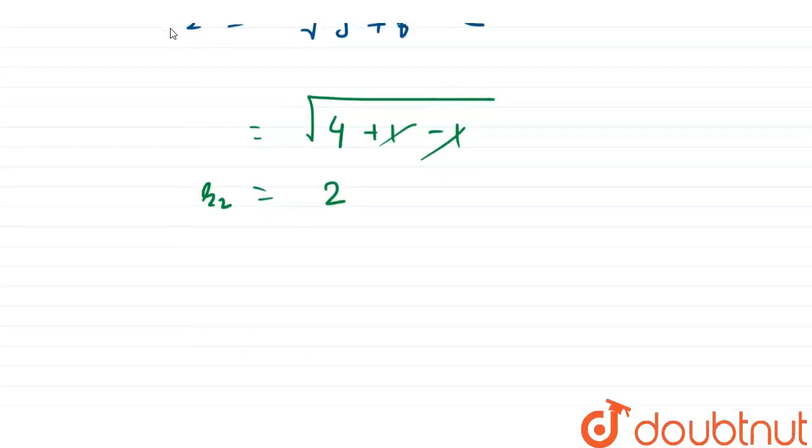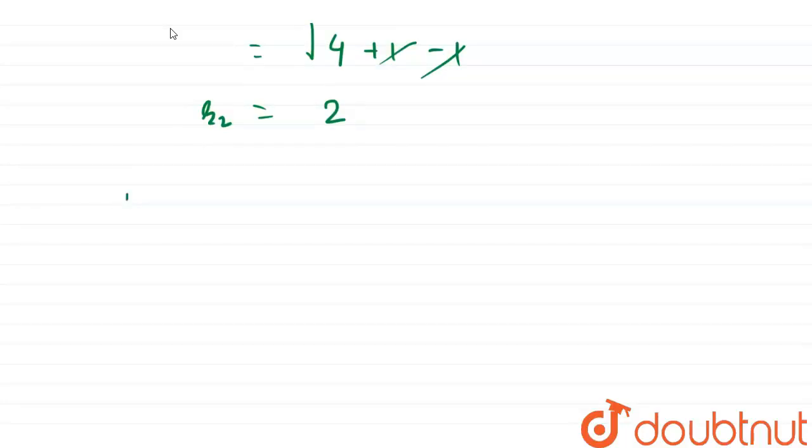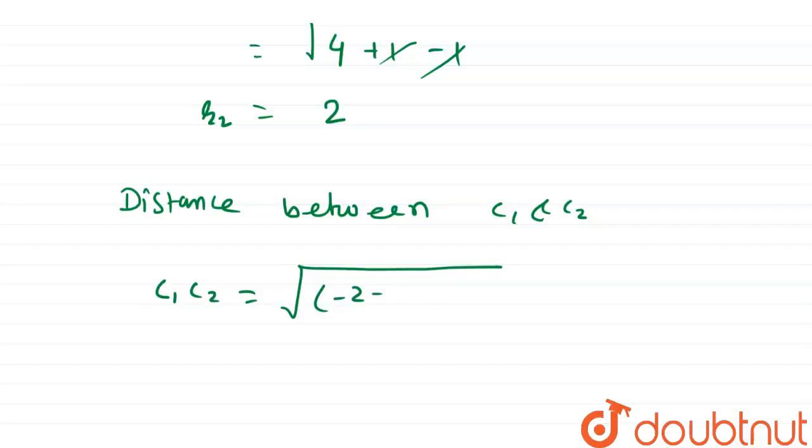Then distance between c1 and c2. Distance between c1 and c2 equals to root under minus 2 minus 1 whole square plus 1 plus 2 whole square, which means 9 plus 9 equals to root 18.